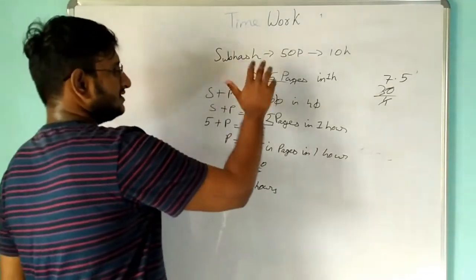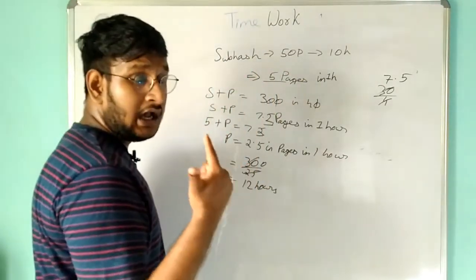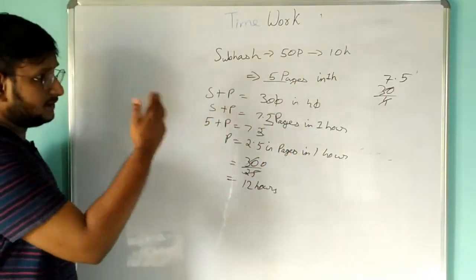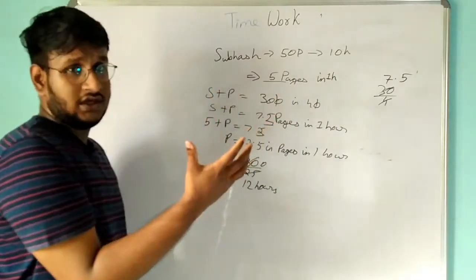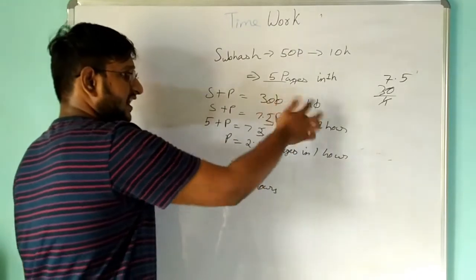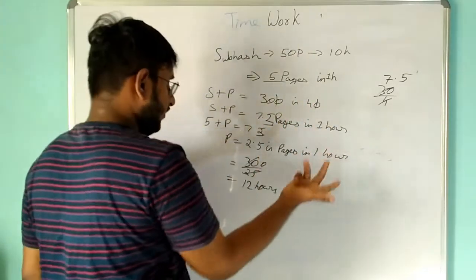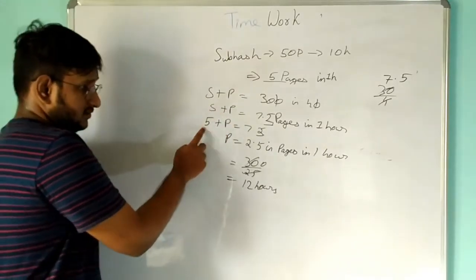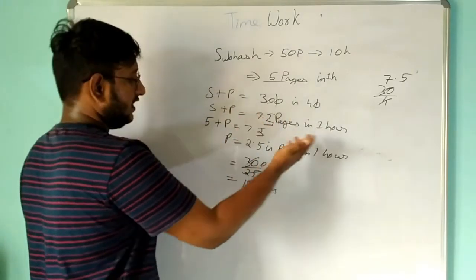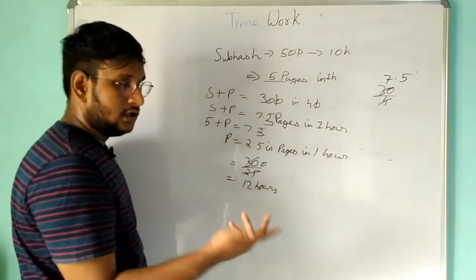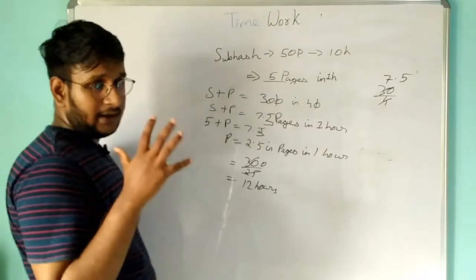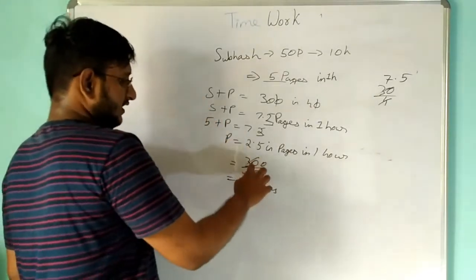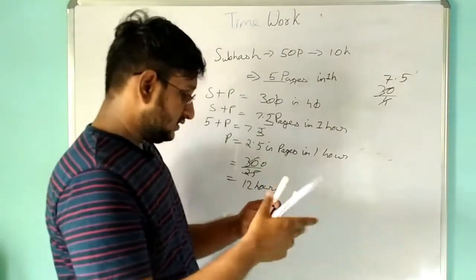To summarize problem 4: Subhash copies 50 pages in 10 hours → 5 pages per hour. Subhash and Prakash together copy 300 pages in 40 hours → 7.5 pages per hour together. Prakash's rate = 7.5 − 5 = 2.5 pages per hour. For 30 pages: 30 ÷ 2.5 = 12 hours.